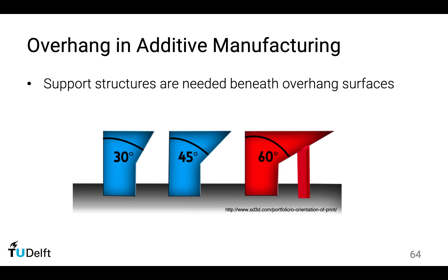One concern is about support structures. As explained in this comparative image, when there is an overhang angle of 60 degrees, you need support structures. This support structure is a waste of material and also means labor-intensive post-processing.